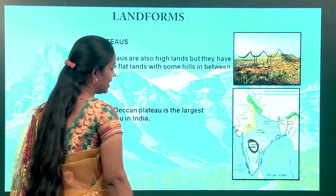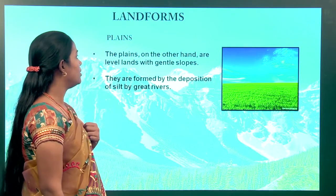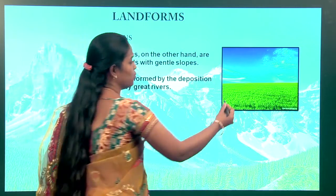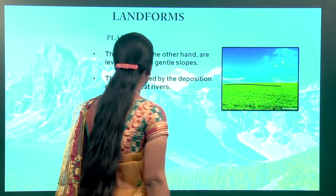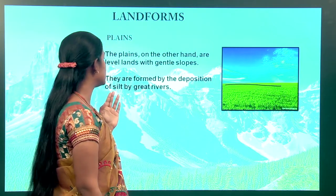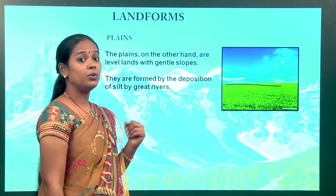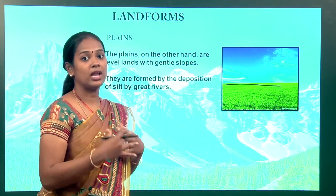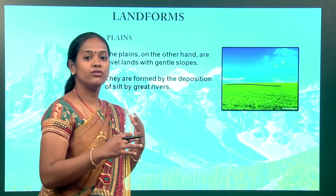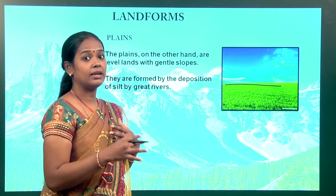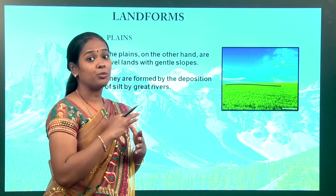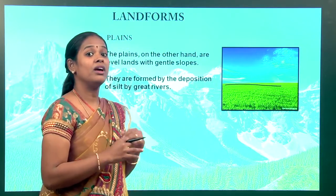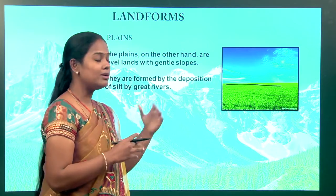Now coming to plains — what are plains? Plains are level lands with gentle slopes. They are formed by deposits of silt from great rivers. When there is heavy flow of a river, the river carries silt, sand and mud, which gets settled and deposited in an area called plains. In this area the soil is very fertile, so you can grow crops on plains.